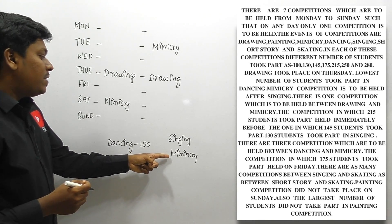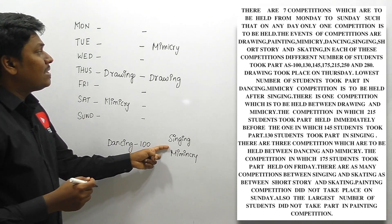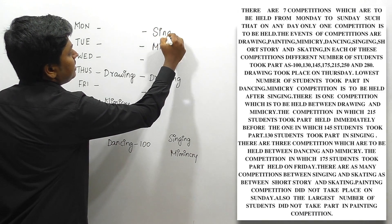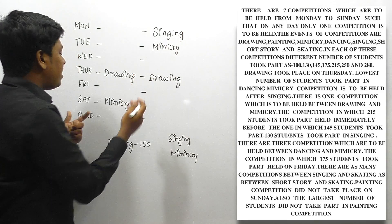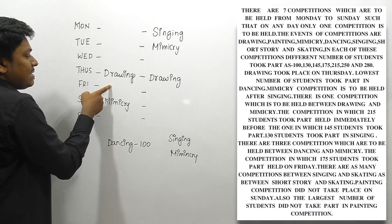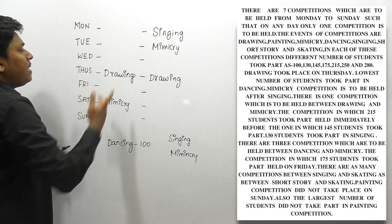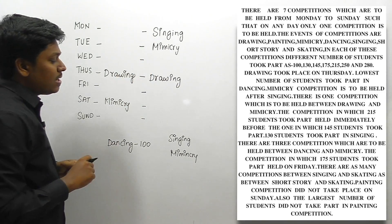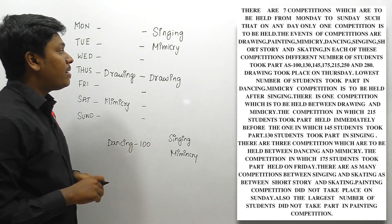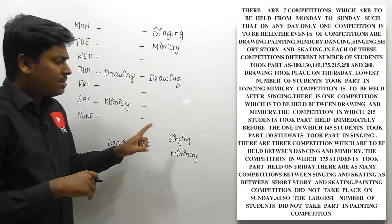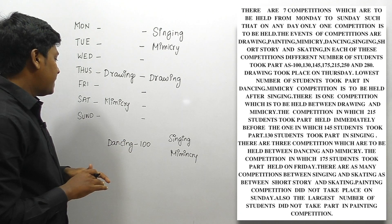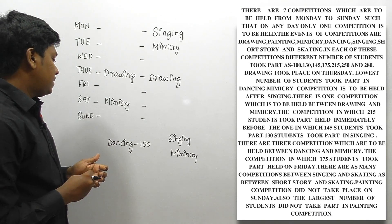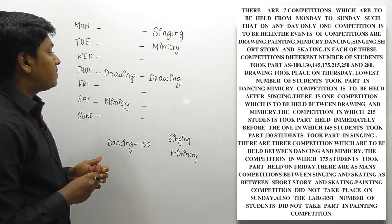In condition one, singing must be placed immediately before the gap leading to mimicry — only one placement is possible there. In condition two, there are many possible placements for singing, but since singing must come before mimicry (not immediately before), we must place singing accordingly. Dancing should also be placed under the 100-student slot.